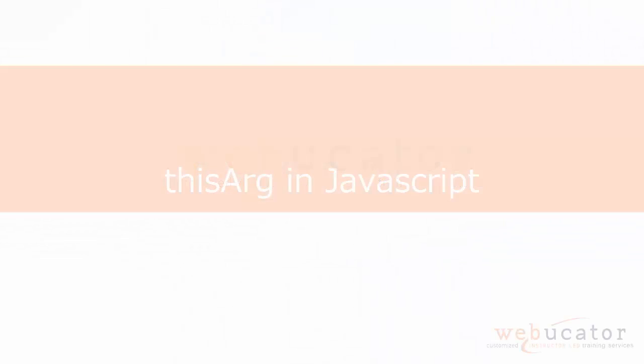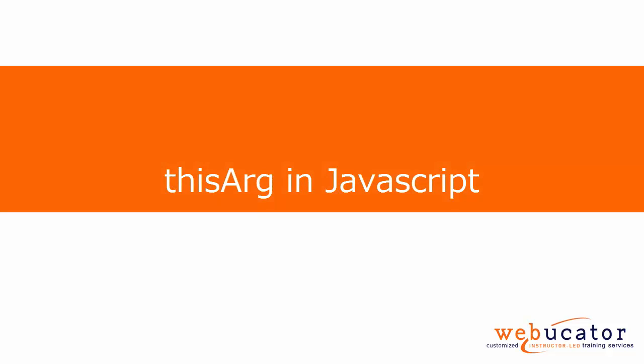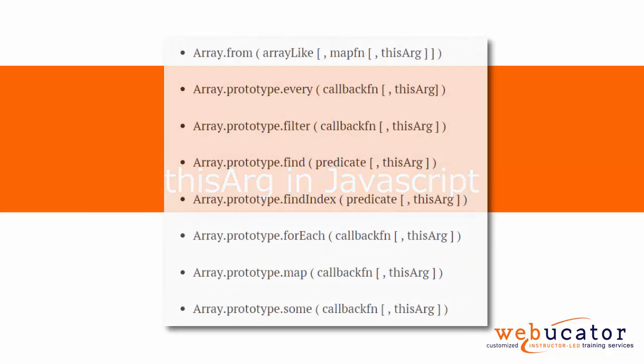In this video, I'm going to show you how to use the thisArg, which is an optional argument of many array methods, including the one shown here.